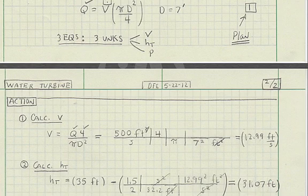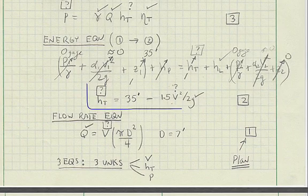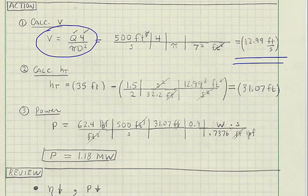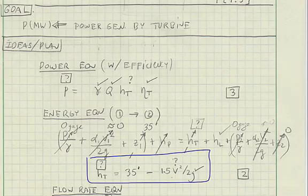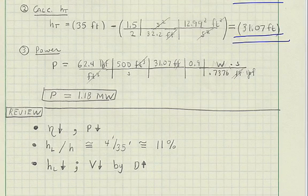Velocity is calculated with this equation. The velocity is about 13 feet per second. Head of the turbine is calculated with this equation. Head of the turbine is 31.1 feet. Power is calculated with this equation. Power is 1.18 megawatts.